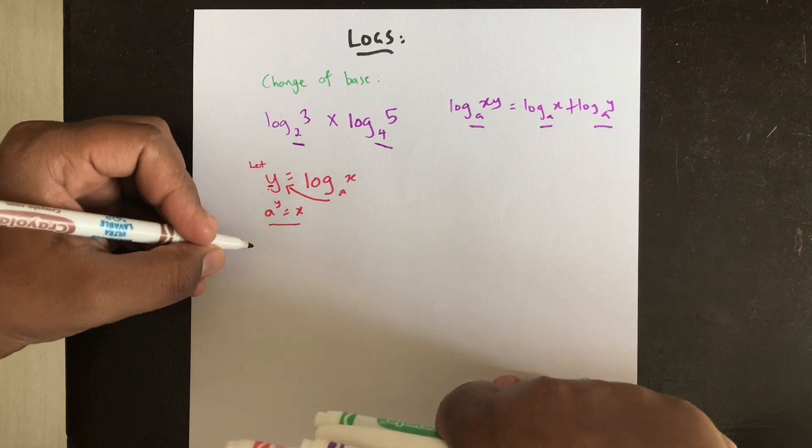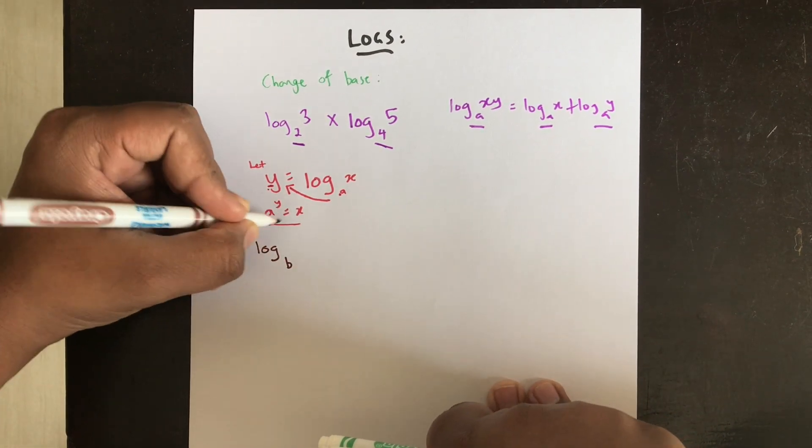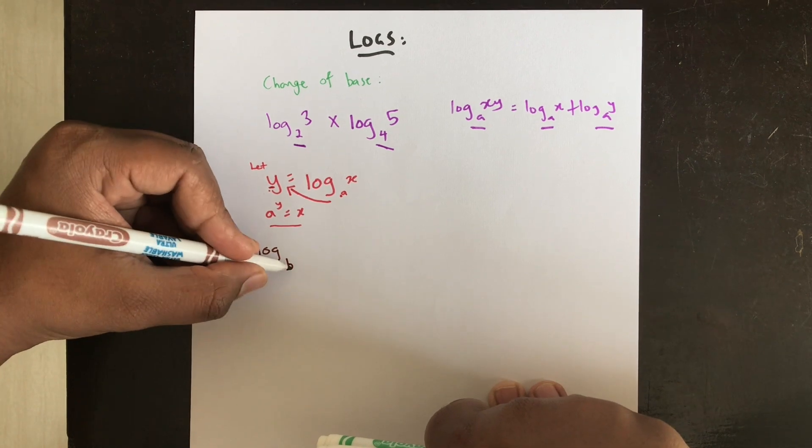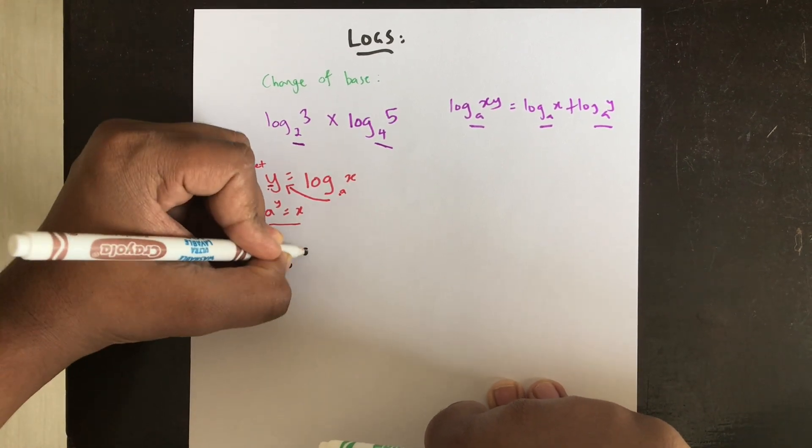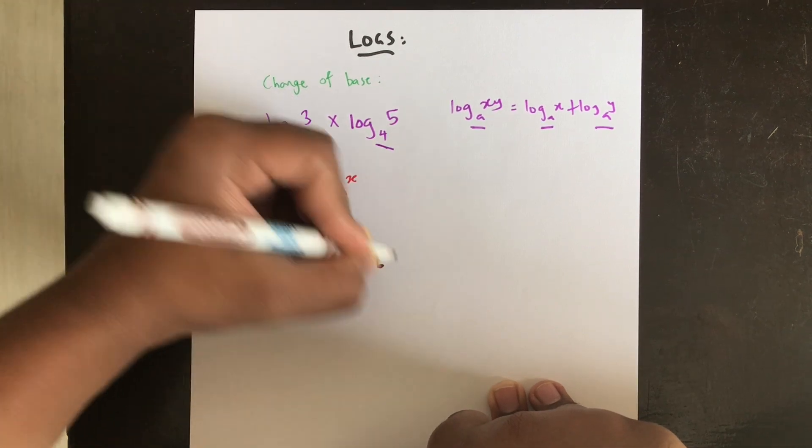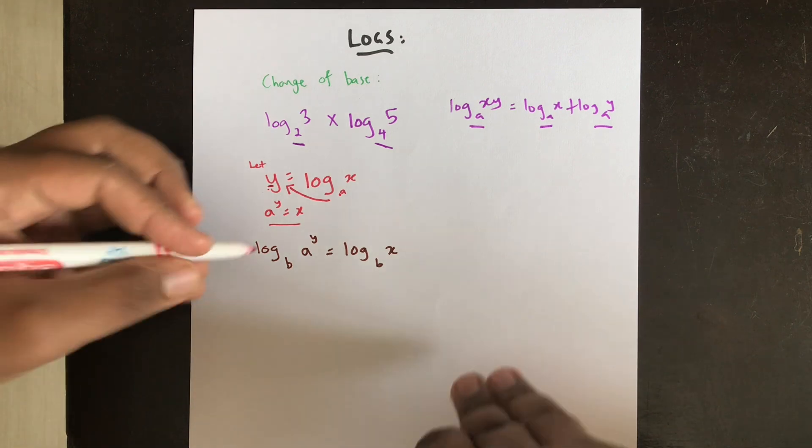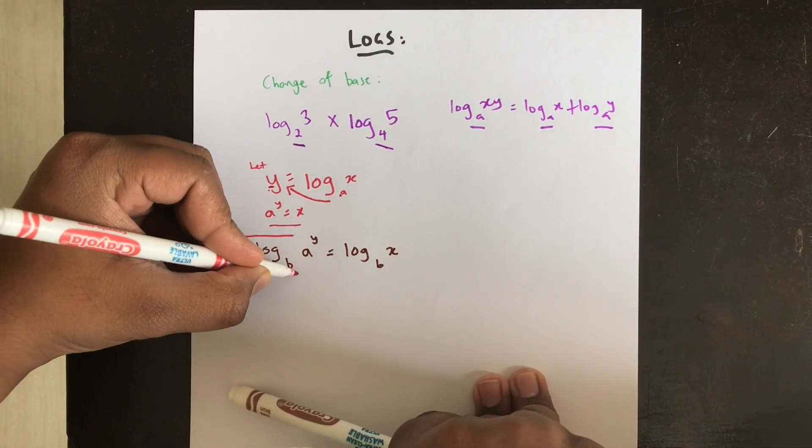Now suppose if I take log base b on both sides. So this becomes log base b over here. a to the power of y is equal to log base b of x. What I've done is that I've introduced this on both sides of the equation.